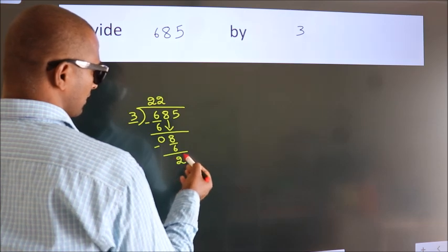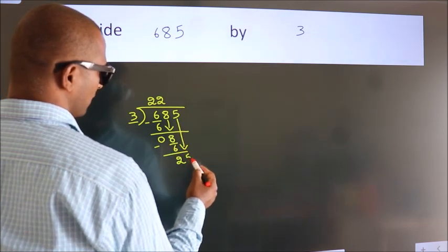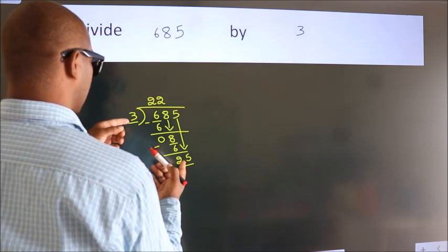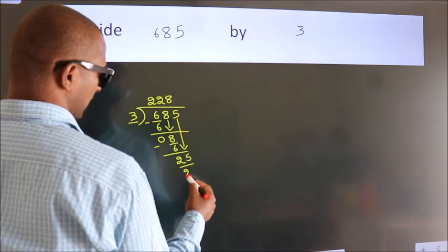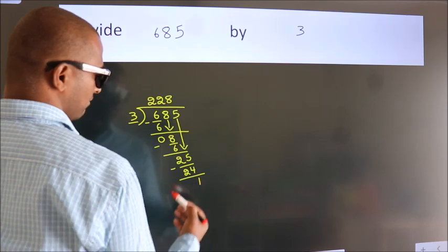After this, bring down the beside number. So, 5 down, making 25. A number close to 25 in the 3 table is 3 eights, 24. Now, we subtract. We get 1.